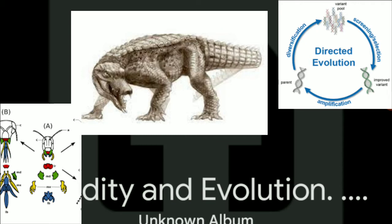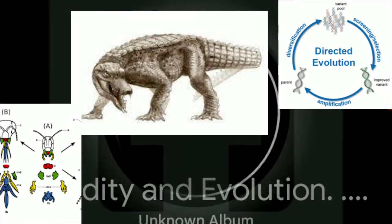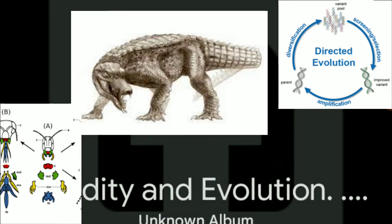Mendel worked out rules for the legacy of these characteristics. Gregor Johann Mendel, viewed as the father of hereditary qualities, played out his tests with Garden Peas in the nursery behind his cloister. He noticed various differentiating characters in Garden Peas and noticed their legacy.